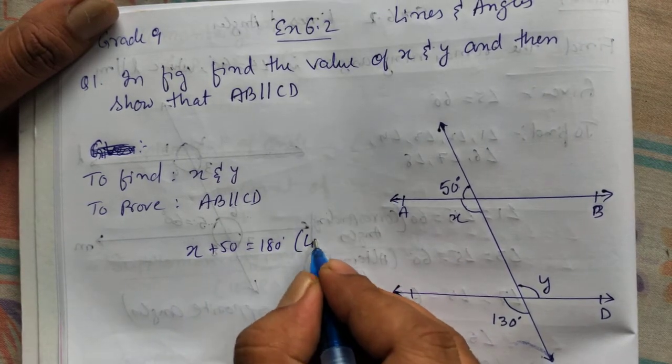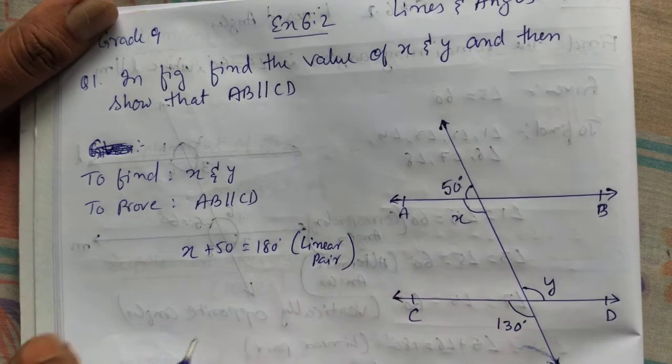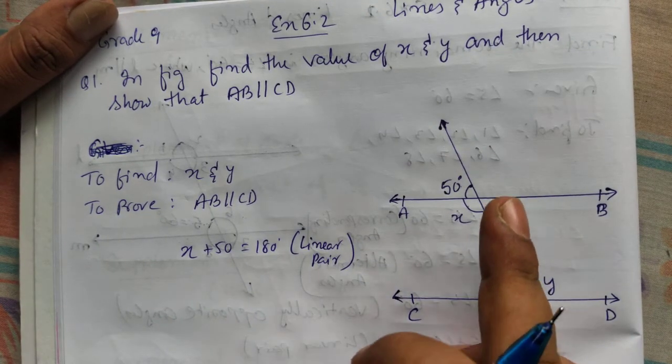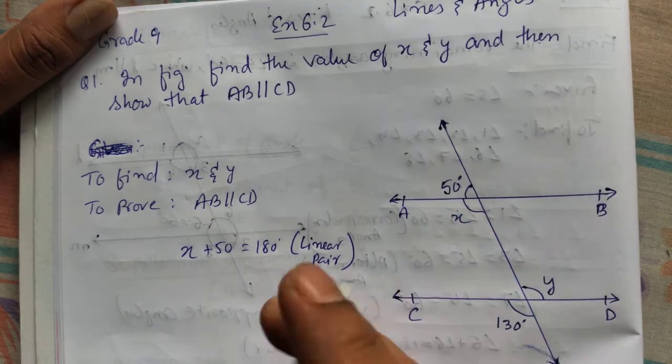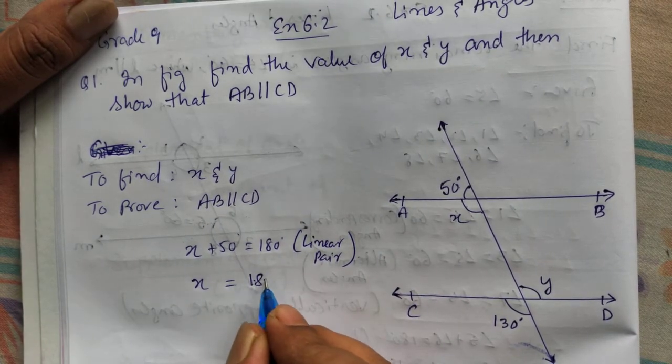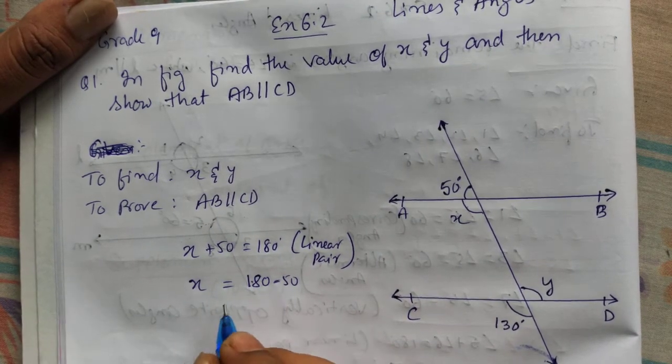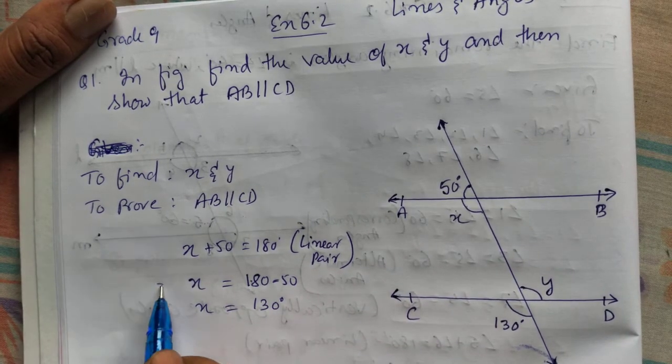Reason is linear pair. In a straight line, if you add two angle and it is 180, two adjacent angle is 180, that is called linear pair. Take 50 on the other side. 180 minus 50. What you will get? x equal to 130 degree. We got the value of x.